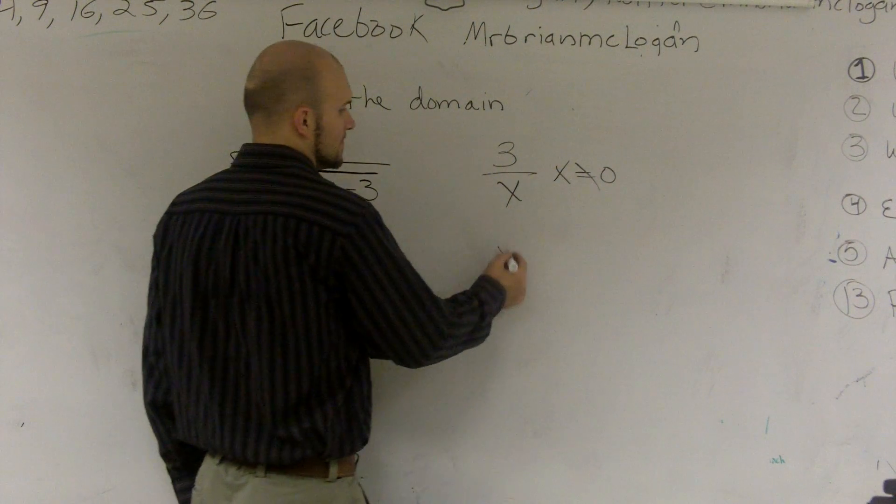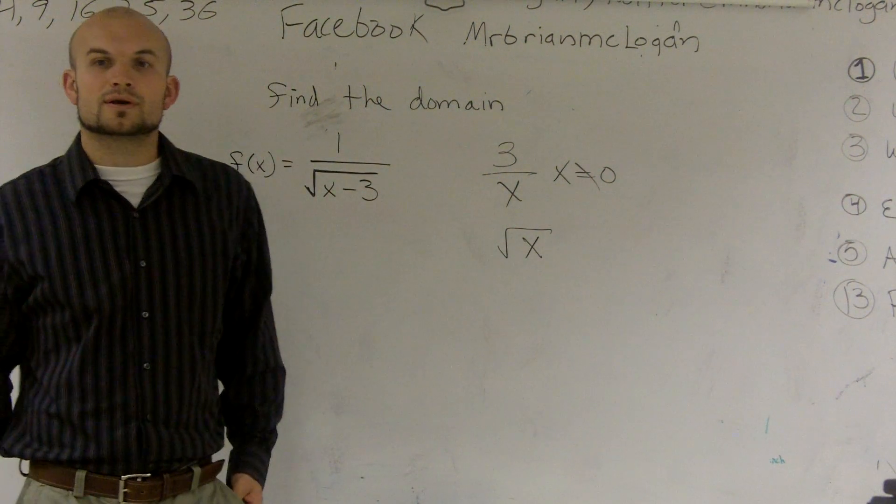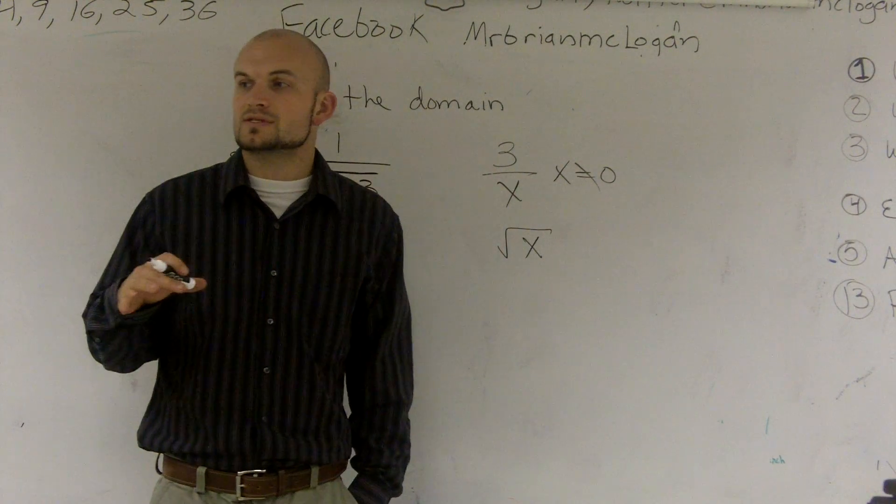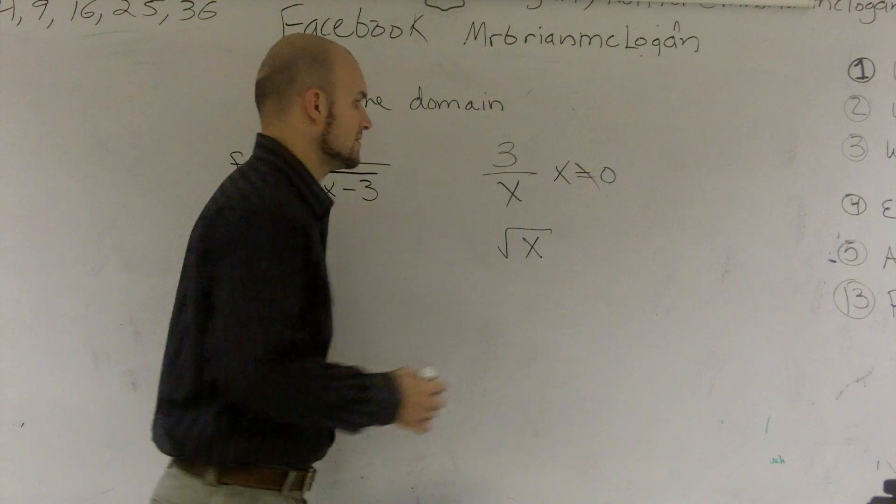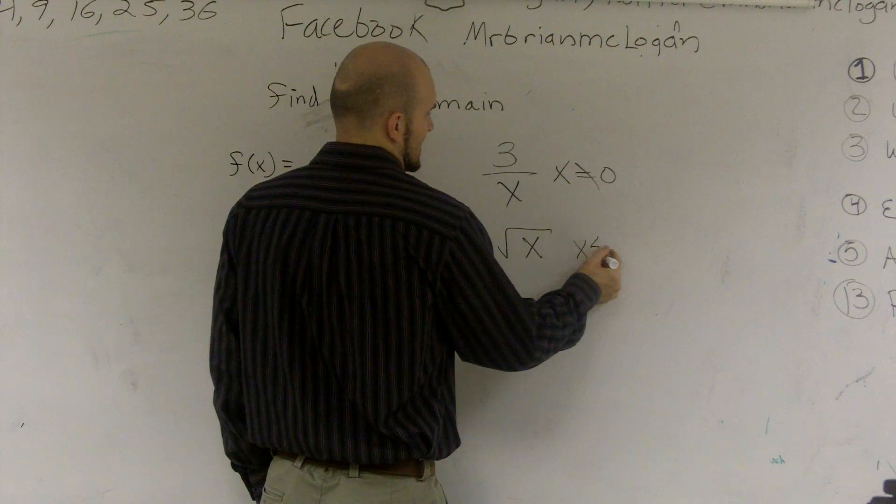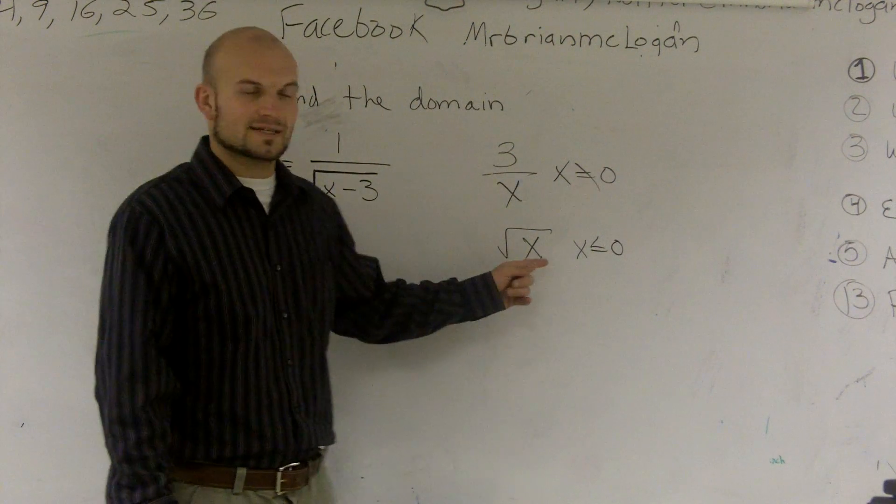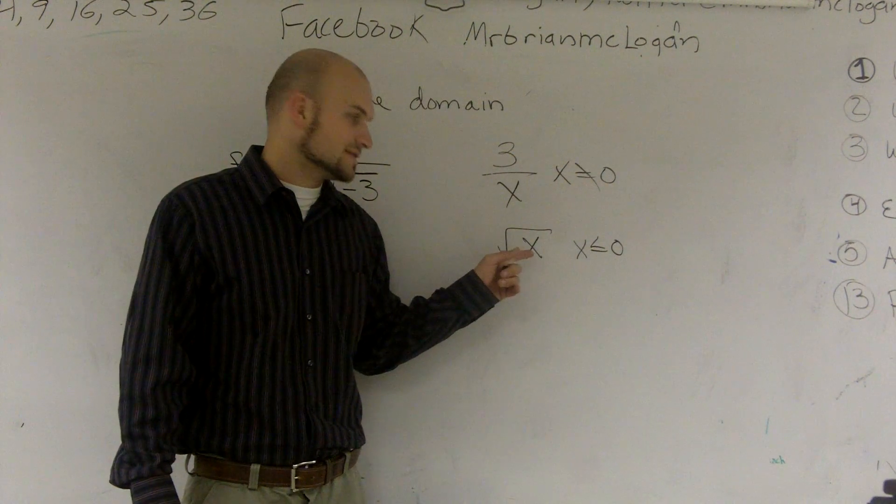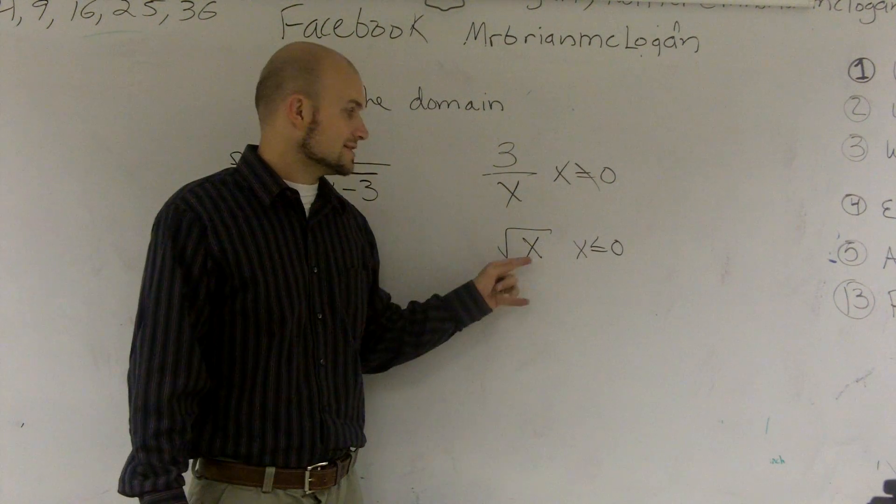And the same thing can be true for the square root of a number. If we're going to take the square root of a number, we can take the square root of all numbers as long as they're positive. But once we say x is less than or equal to 0, you can't take the square root of a number that's less than 0 and get a real answer.